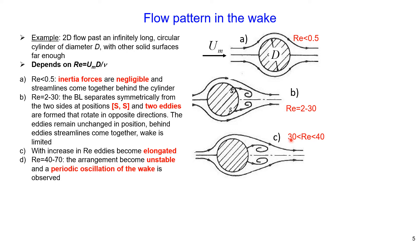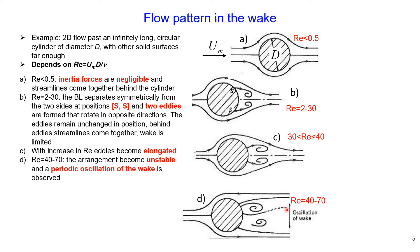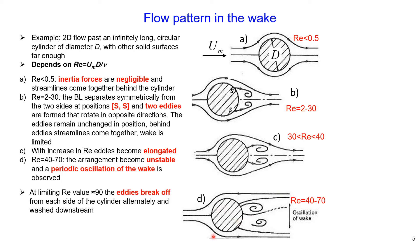With further increase in Reynolds number — between 40 and 70 — the arrangement becomes unstable and periodic oscillations of the wake are observed. At a limiting Reynolds number of approximately 90, the eddies break off from each side of the cylinder alternately and are washed downstream, and the wake region is significantly increased.